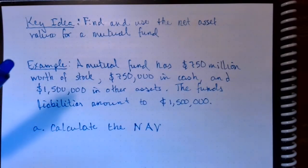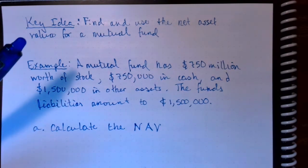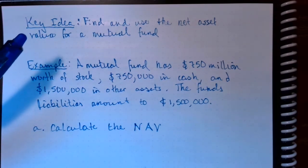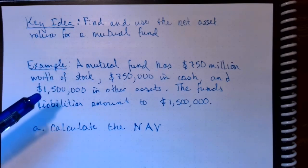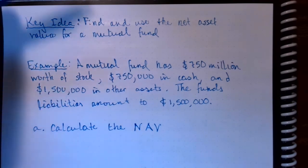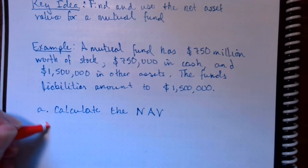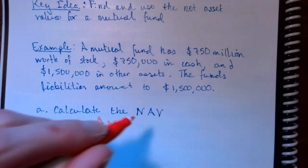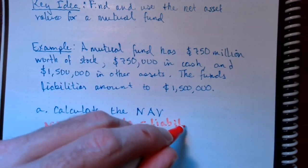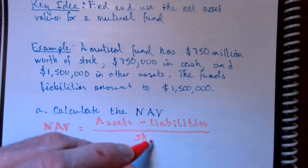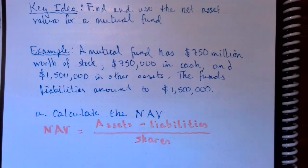The key idea for this video is to be able to find and use something called the net asset value for a mutual fund. Remember, a mutual fund is a bunch of people pooling all their money together to invest in lots of different stocks. When calculating net asset value, you take the total assets, subtract the liabilities, and then divide that quantity by the total number of shares that the mutual fund has.